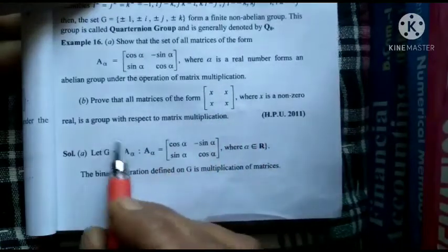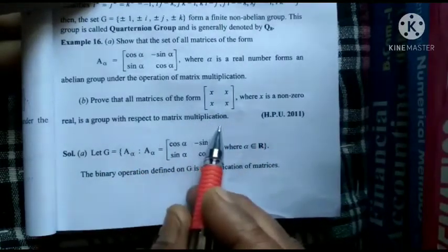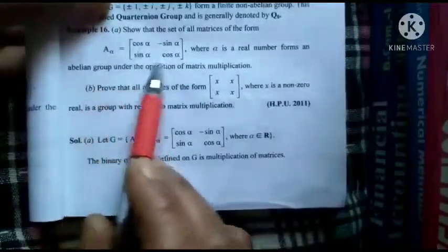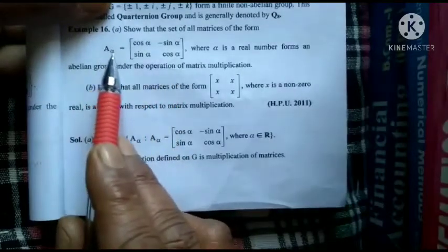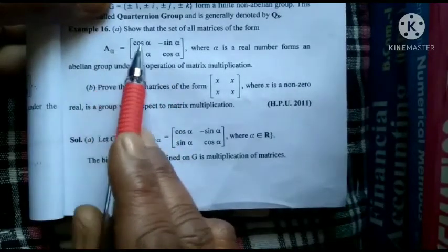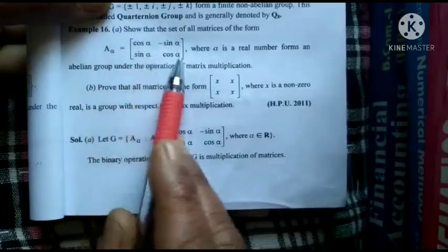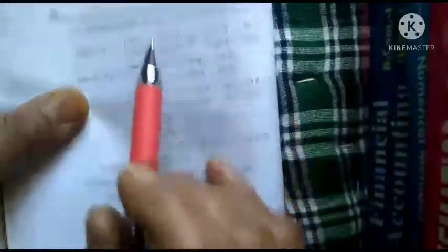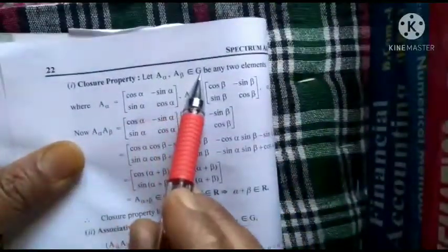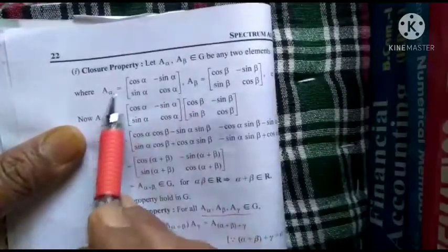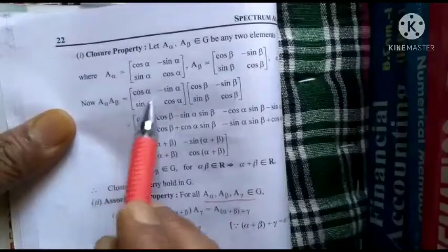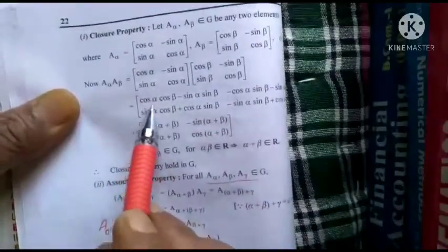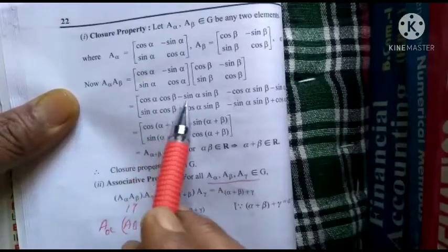For the first example, take element A(α) and multiply it by a second element A(β). If we take a third element A(γ), we use A(β)'s value and apply it. Under multiplication, the first property is closure: if A(α) and A(β) belong to G, these are the two elements in G. This is the value of A(α) and this is the value of A(β). In this case, A(α) and A(β) use row-by-column multiplication.